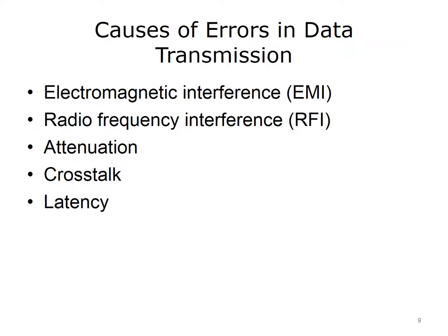Many things can cause errors during data transmission. These errors may cause the data to not be received at all, or they may alter the data so it is not the same as what was sent. Electromagnetic interference (EMI) and radio frequency interference (RFI) are caused by motors, power lines, fluorescent lights, radio or TV tower signals, or any other source of electrical or radio signals. EMI interferes with signals sent electronically across copper cables, and RFI interferes with wireless signals.